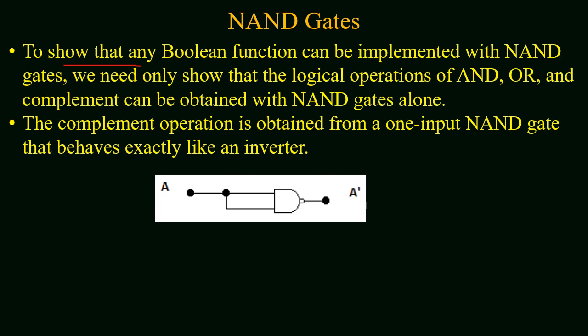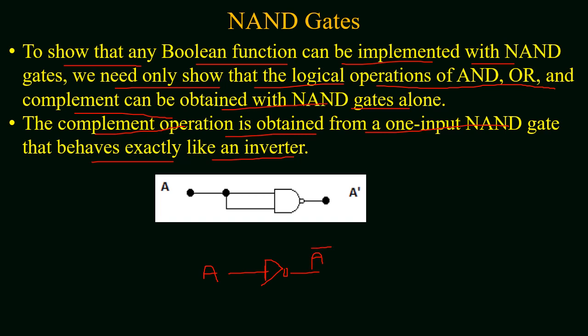To show that any Boolean function can be implemented with a NAND gate, we need only to show that the logical operations of AND, OR, and complement can be obtained with NAND gates alone. The complement operation is obtained from a one-input NAND gate that behaves exactly like an inverter. Since a NAND gate has a minimum of two inputs, we short both inputs together, so input A gives output (A · A)' = A'. The NAND gate thus acts as an inverter.